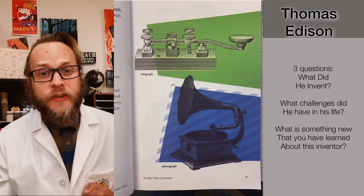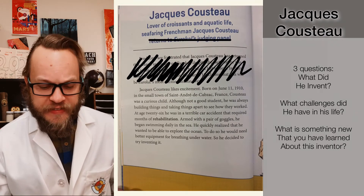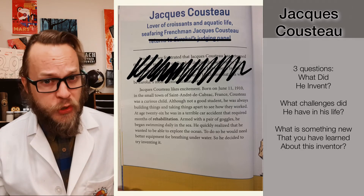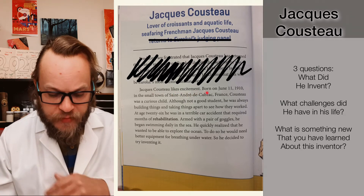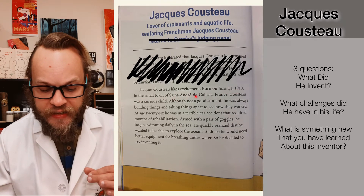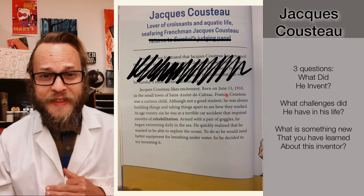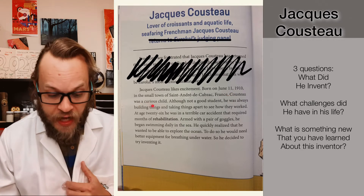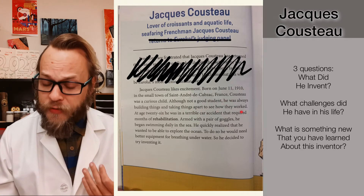Our second inventor for today is Mr. Jacques Cousteau. He is a lover of croissants and aquatic life — the seafaring Frenchman Jacques Cousteau. Jacques Cousteau likes excitement. He was born on June 11th, 1910 in the small town of Saint-André-de-Cubzac over in France. Cousteau was a curious child. Although not a good student, he was always building things and taking things apart to see how they worked.